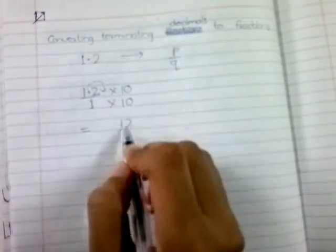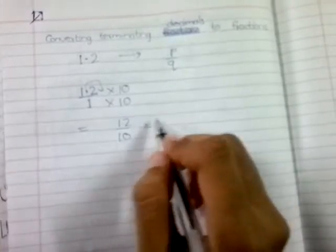And 1 times 10 gives you 10, so 12/10. Reduce it to simplest form: 12 and 10 are both divisible by 2. So 6/5—there you have the fraction.